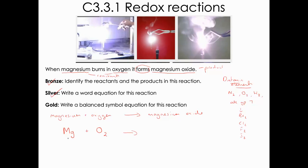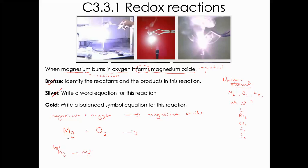Magnesium oxide is an ionic compound. Magnesium is in group two, so it always forms Mg2+, because it has two electrons in the outer shell which it loses to have a full outer shell. Oxygen is in group six, so it gains two electrons and becomes O2-. Because we've got 2+ and 2-, the charge on both is the same, so we just need one of each. The chemical formula of magnesium oxide is MgO.